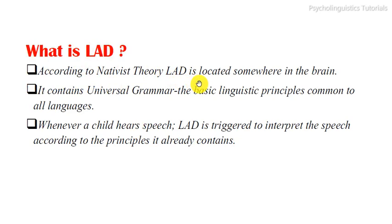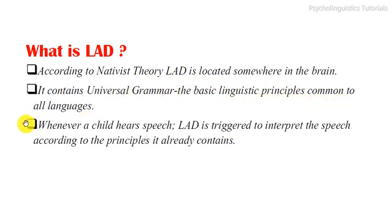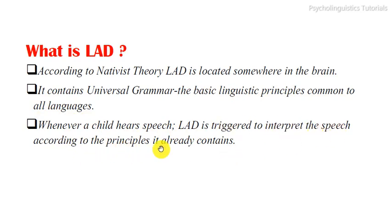LAD is located somewhere in the brain. It contains universal grammar — the basic linguistic principles common to all languages. Whenever a child hears speech, the LAD is triggered to interpret the speech according to the principles it already contains.